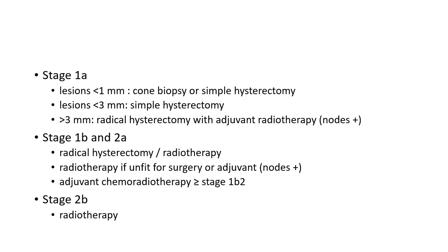Now let us see about treatment of early-stage cervical cancer. For stage 1a, if the lesions are less than 1 mm, cone biopsy or simple hysterectomy should be done. If the lesion is between 1 to 3 mm, simple hysterectomy should be done. If the lesion is greater than 3 mm, radical hysterectomy should be done, and adjuvant radiotherapy should be given if the nodes are positive. For stage 1b and 2a, radical hysterectomy and radiotherapy should be given. Radiotherapy is preferred if the patient is unfit for surgery, or used as an adjuvant if nodes are positive. Adjuvant chemoradiotherapy is given if the stage is greater than or equal to 1b2.